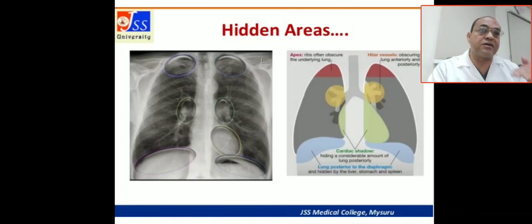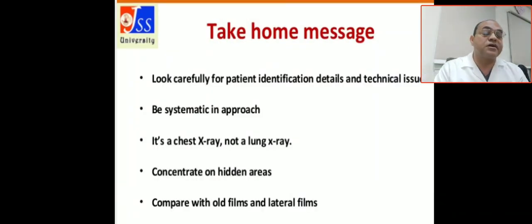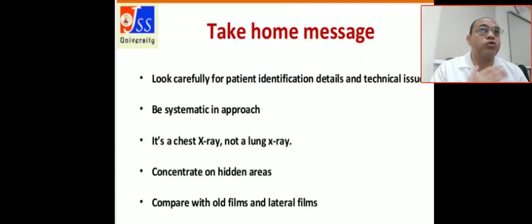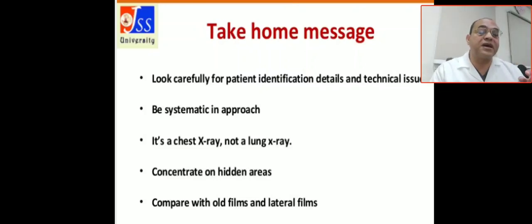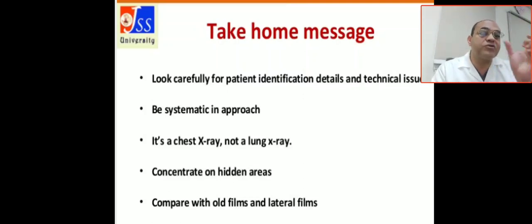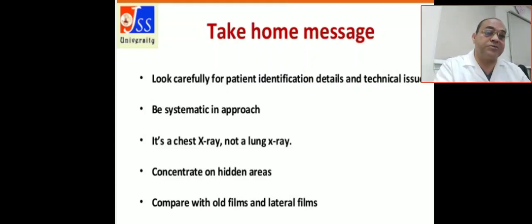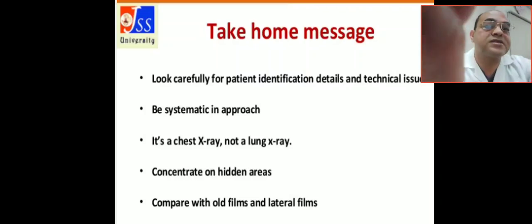Our take-home message today: when commenting on a chest X-ray, you have to look carefully at patient identification and details, use a systematic approach as mentioned with the 6P method, comment on the whole X-ray — not just the lung — and concentrate on the four hidden areas. Most importantly, you must compare with all previous films and lateral films, collecting all films and comparing them to each other. Thank you, Salam Alaikum.